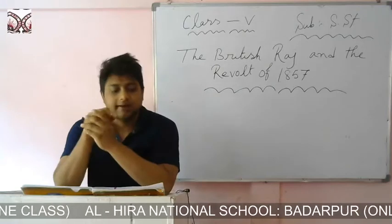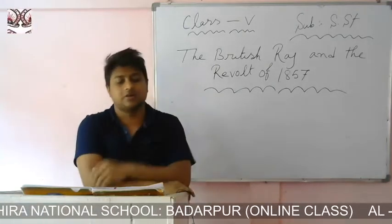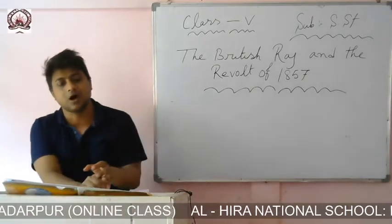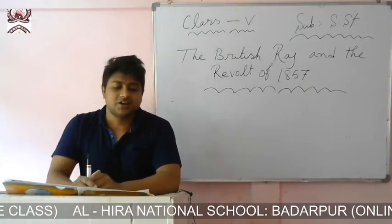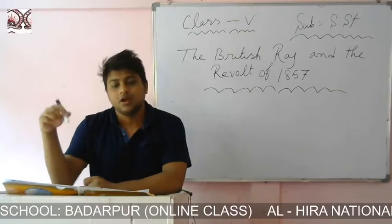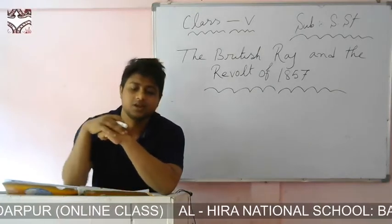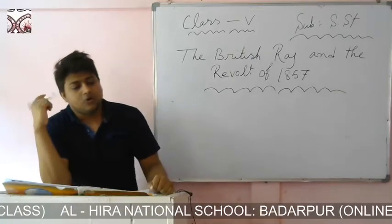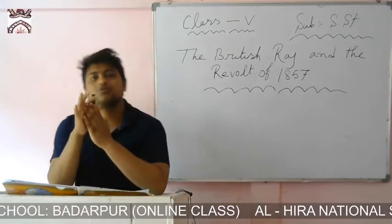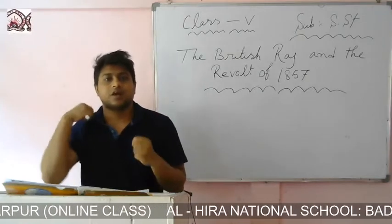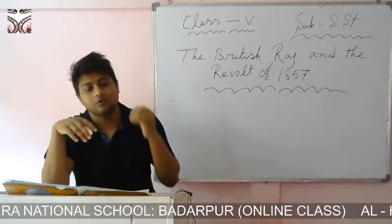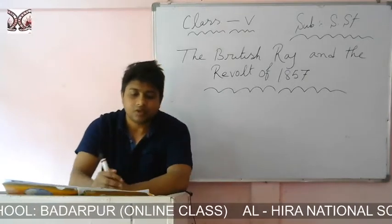When the British came, their first intention was to trade only. Some rich British traders formed a company to trade with India, named the East India Company. The company was given the exclusive right to trade in the East by Queen Elizabeth, who permitted this company to trade with the Indian market.